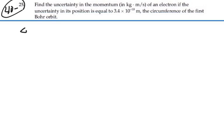So we're told that the uncertainty in its position is 3.4 times 10 to the minus 10 meters. Generally for the uncertainty principle we're going to use h-bar which is equal to Planck's constant divided by 2 pi.